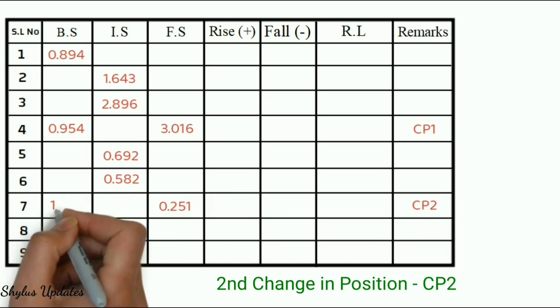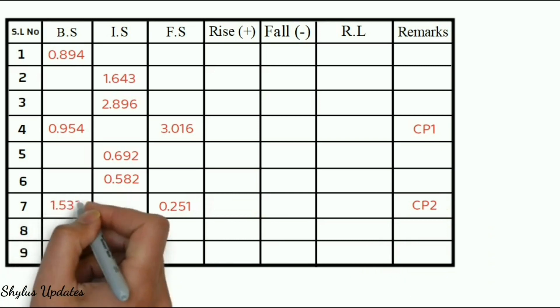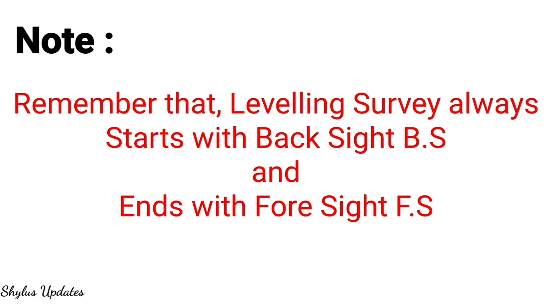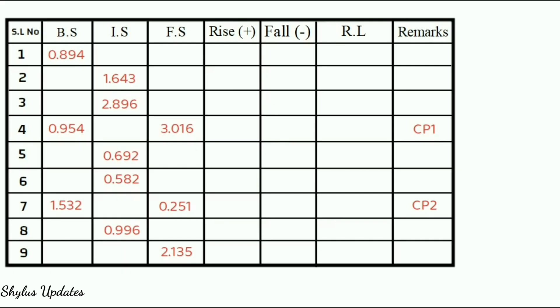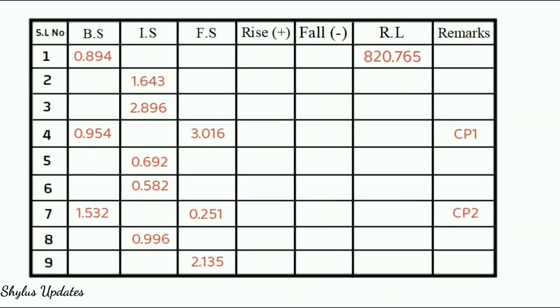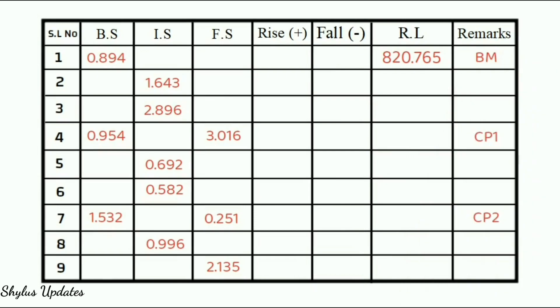After this, next reading, that is, ninth reading 1.532 should be entered in back sight BS. The following reading 0.996 can be entered in intermediate sight IS. Last reading 2.135 should be entered in foresight FS. Remember that leveling survey always starts with back sight BS and ends with foresight FS. Next, reduced level of first point has been given in question as 820.765 meter, which is the benchmark.